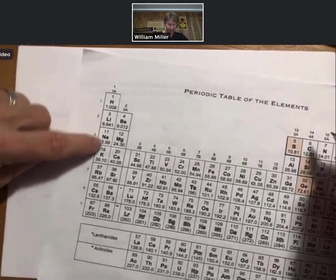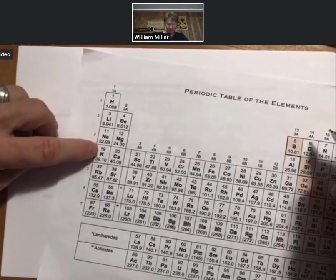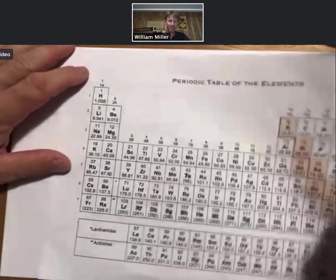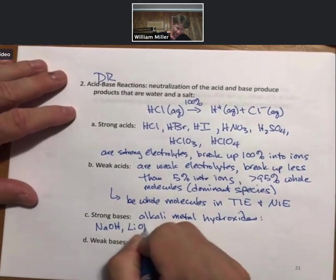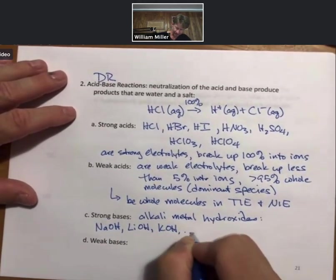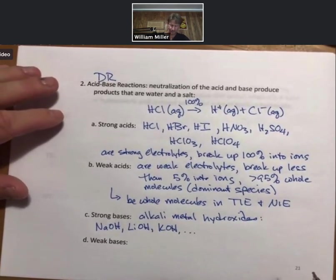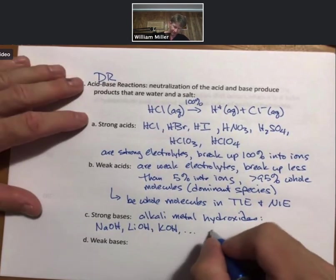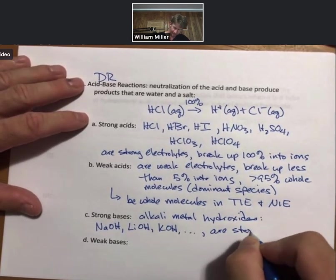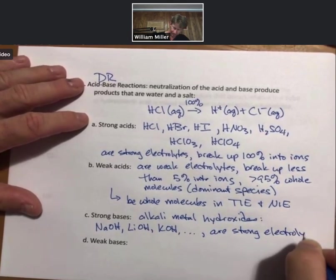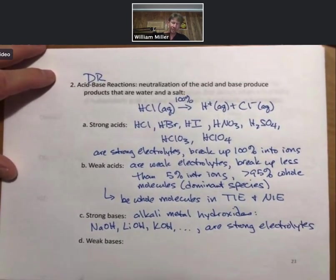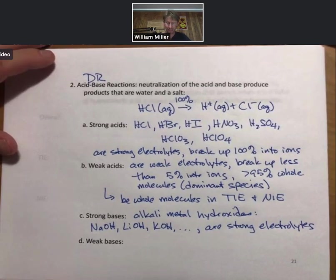And so as examples you can take your periodic table. You can go down the alkali metals. Lithium hydroxide, sodium hydroxide, potassium, rubidium, and cesium hydroxide. Those are the only strong bases you will see. Lithium hydroxide, potassium hydroxide, dot dot dot. And strong bases are strong electrolytes. They break up 100% into ions. Sodium hydroxide breaks up into sodium ions and hydroxide ions.